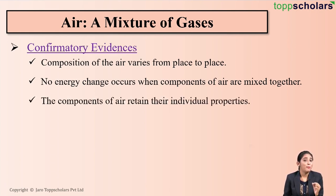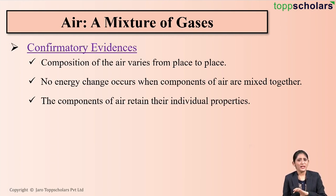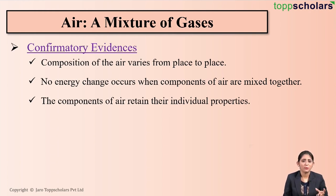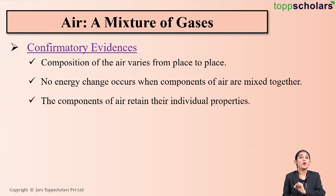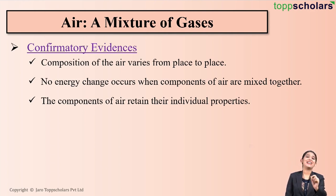The next evidence is that the components of air retain their individual properties. Whether it is oxygen gas, nitrogen gas, or carbon dioxide gas present in the atmosphere, all these components retain their individual properties. Whereas in a compound, the components do not retain their individual properties. This proves that air is a mixture.